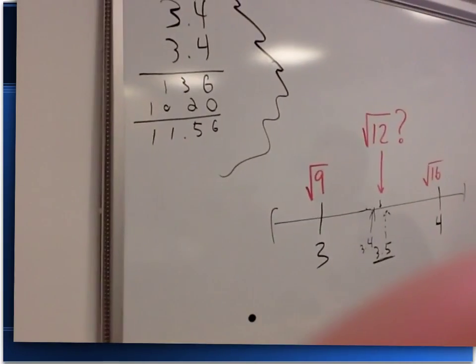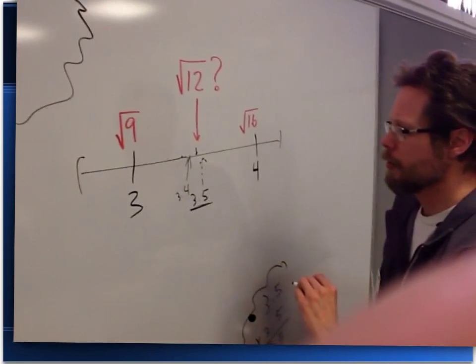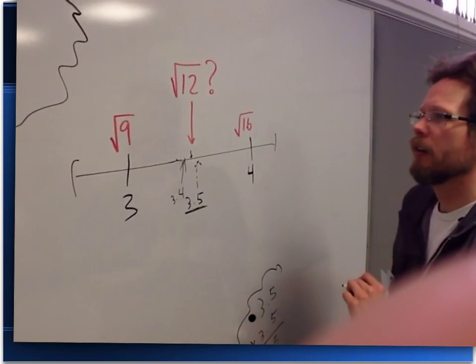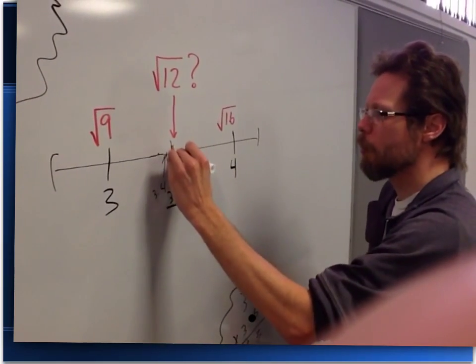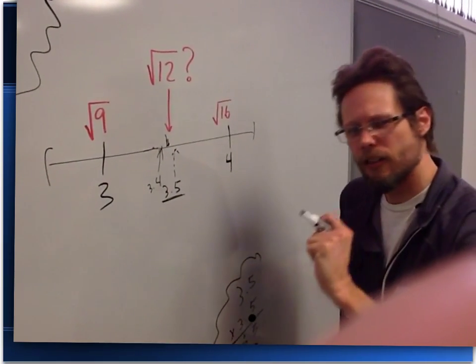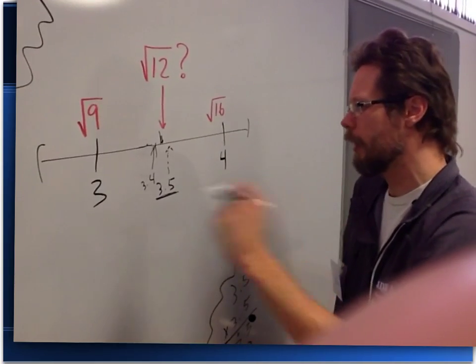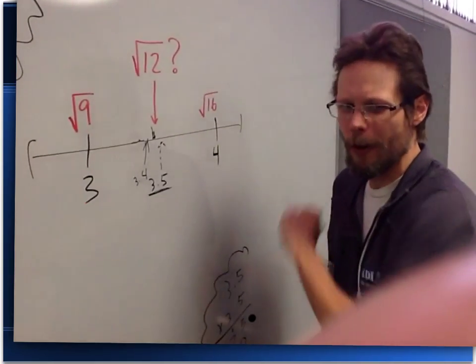We think it maybe looks a little bit closer to the 3.4, so maybe guess 3.43, and try that. And we just keep trying and checking and trying and checking until we get an answer that has the level that we want. We'll never quite get there.